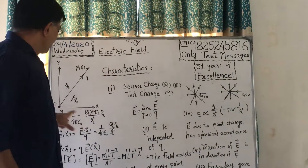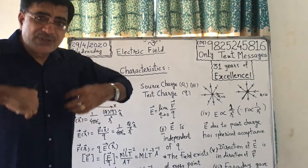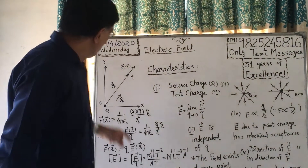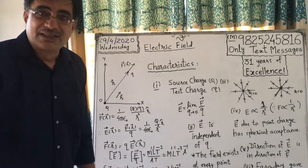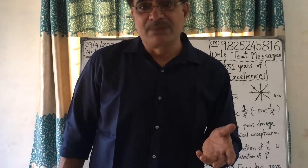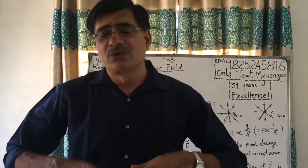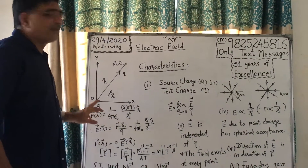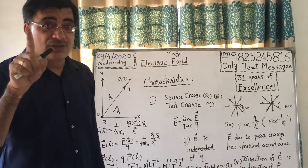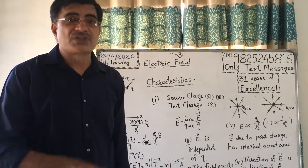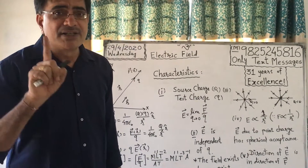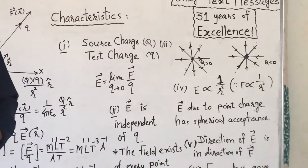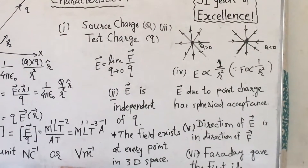First — the charge which produces electric field is called source charge, and the charge which checks how much is the effect is called test charge. Here, small q is test charge and capital Q is source charge. Now, if you are appearing in an exam and I am a supervisor, I must keep silence — if I go on speaking, you will be disturbed. Similarly, this small q must not have any effect on the field of source charge capital Q, so test charge should be as minimum as possible.